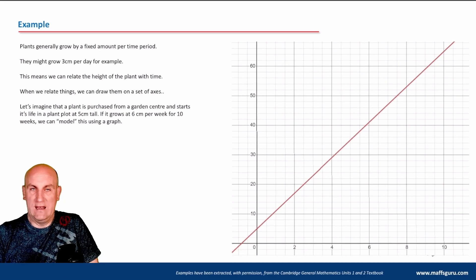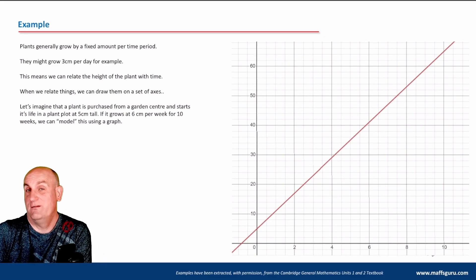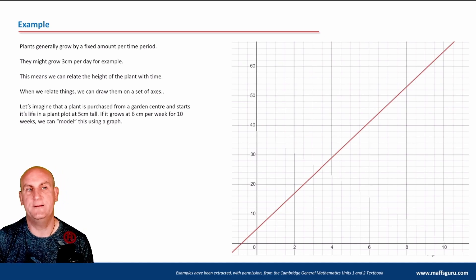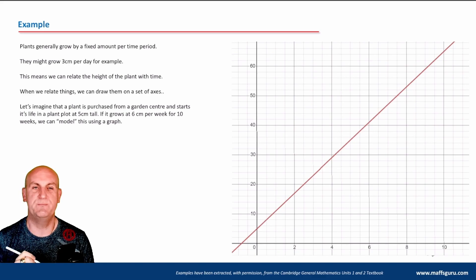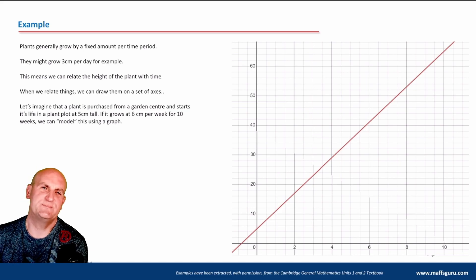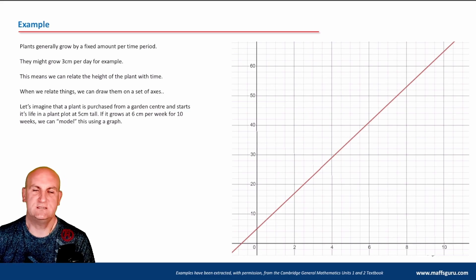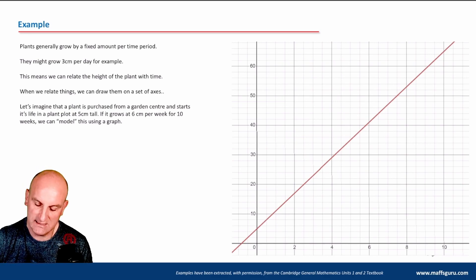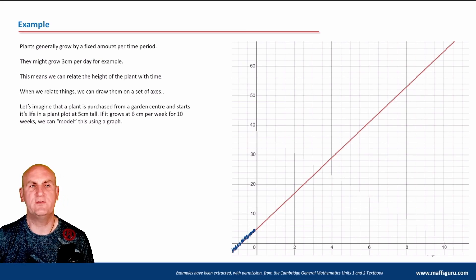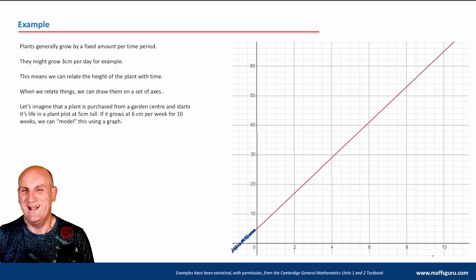Linear modeling basically just means: can you read a straight line graph, or do you understand what a straight line graph means? Imagine a plant purchased from a garden center, starting life in a plant pot at five centimeters tall. If it grows at six centimeters per week for 10 weeks, we can model it using a graph. Part of the graph shouldn't exist because I cannot have a negative time.